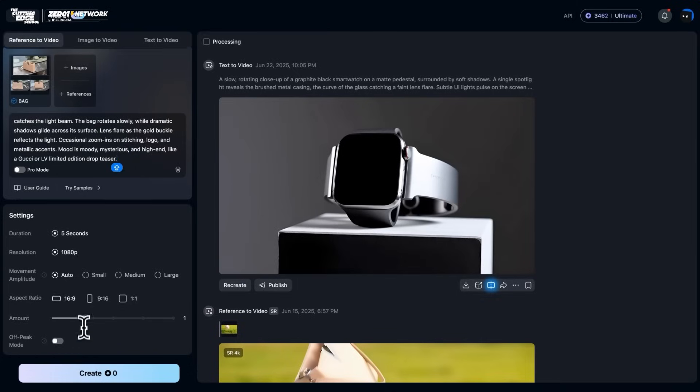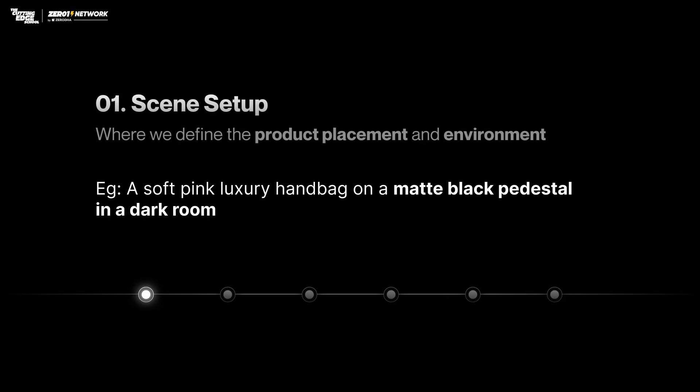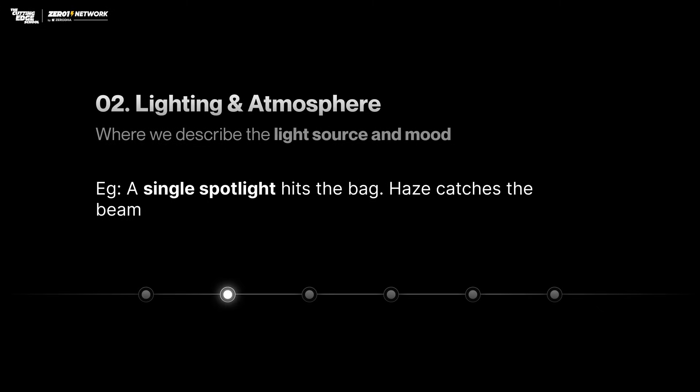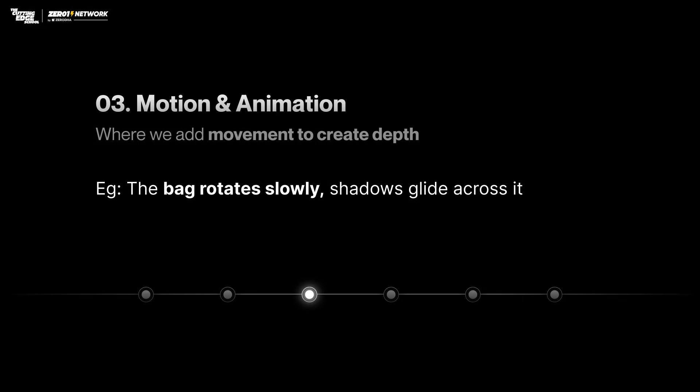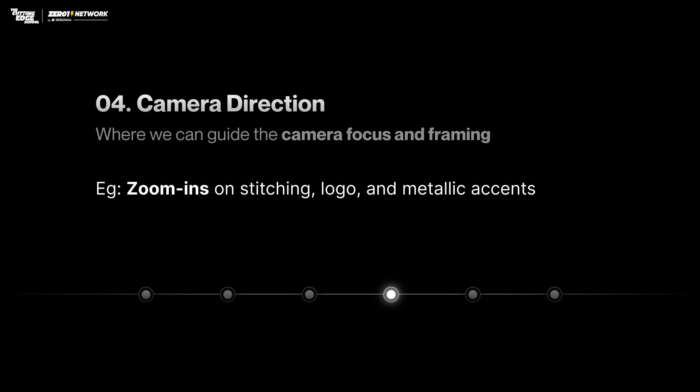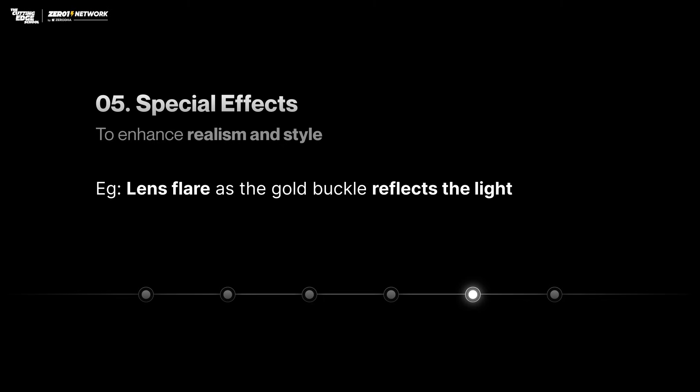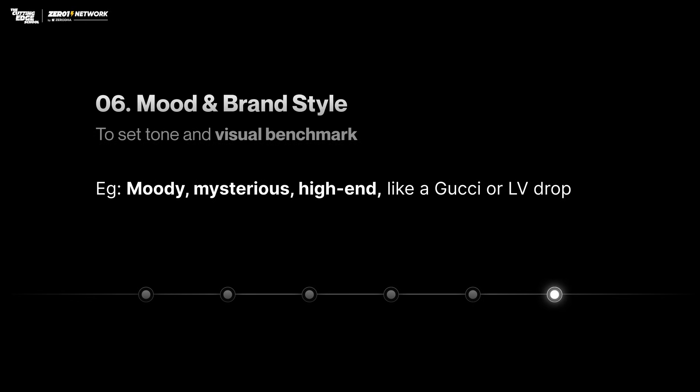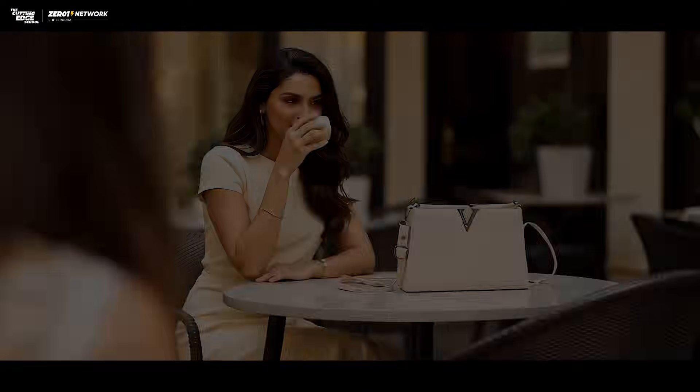After uploading our image references in Vidu Q1, we wrote a precise prompt using six key elements. First, scene setup — defining product placement and environment. Second, lighting and atmosphere — describing the light source and mood. Third, motion and animation — adding movement to create depth. Fourth, camera direction — guiding camera focus and framing. Fifth, special effects — enhancing realism and style. Sixth, mood and brand style — setting the tone and visual benchmark. Our final prompt looked like this, and after submitting, this is what Vidu gave us!